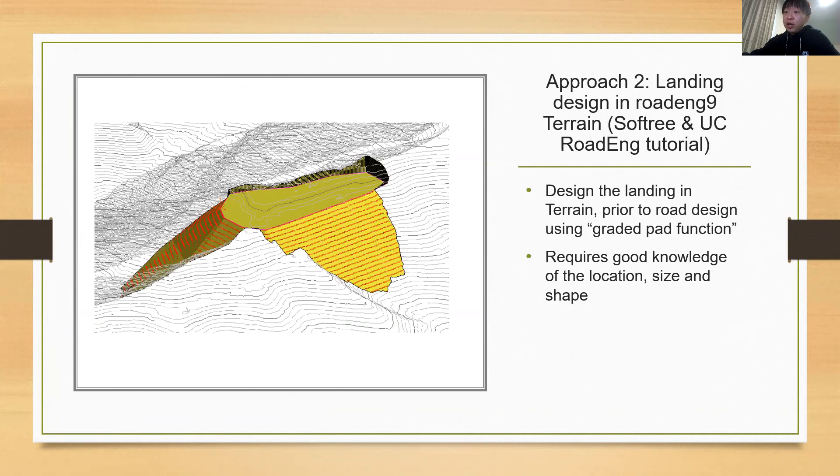Approach two is to design the landing and terrain module using the graded path functions that allows users to import polygon features as the landing area. The method requires users to import the landing prior to the road design in terrain. This requires good knowledge of the location, size, and shape of the landing design.